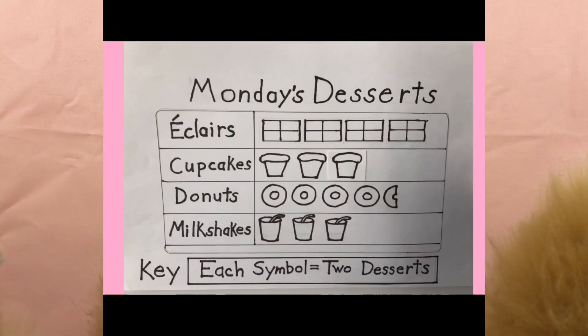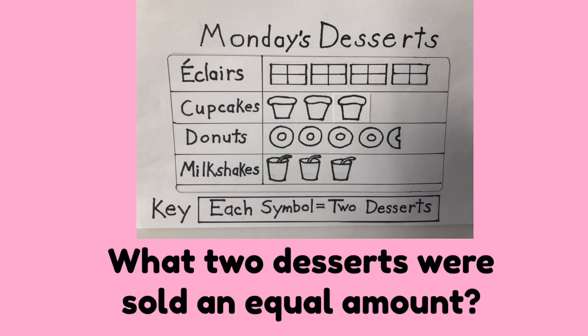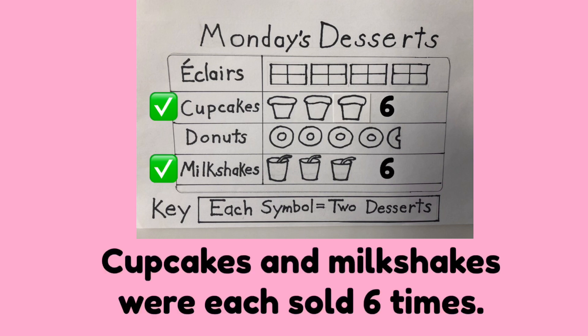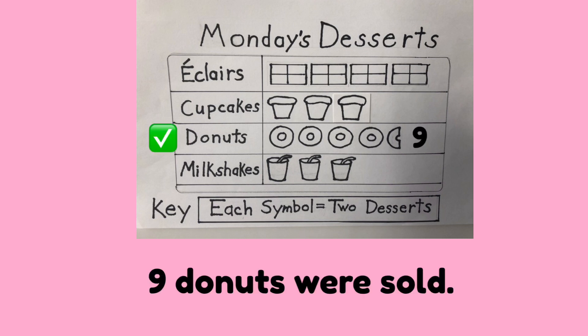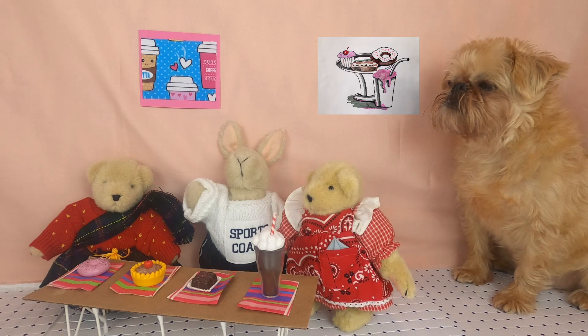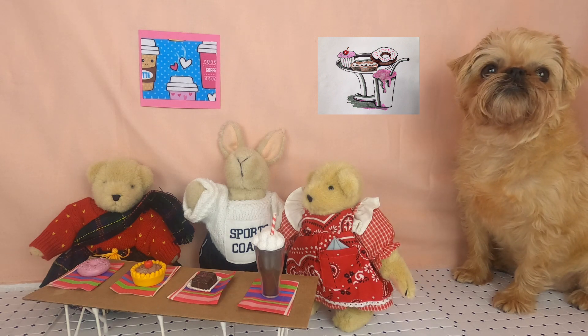Lucy, do you have that pictograph done? Made the deadline. Let's look at the data. What two desserts were sold in equal amounts? Cupcakes and milkshakes were each sold six times. How many donuts were sold? Nine donuts were sold. Because of our pictographs, we've doubled our revenue on our most popular desserts!